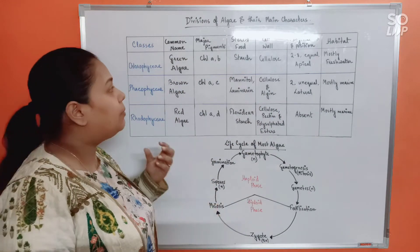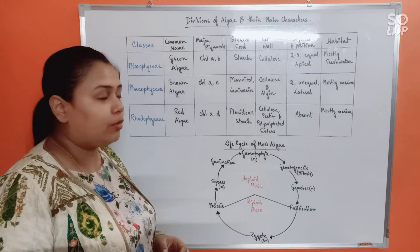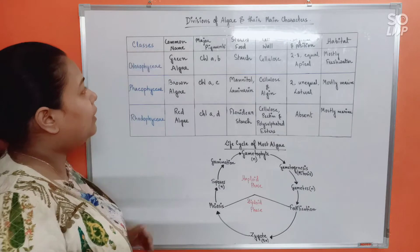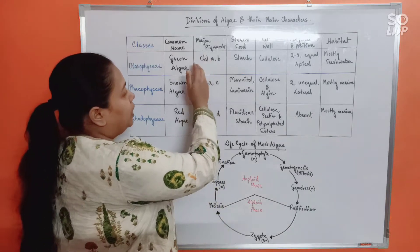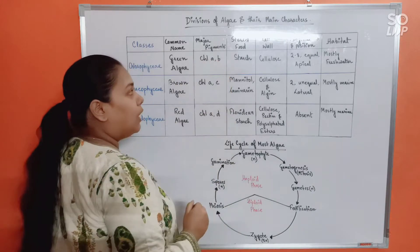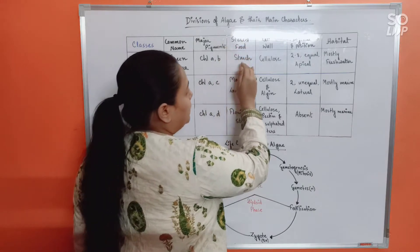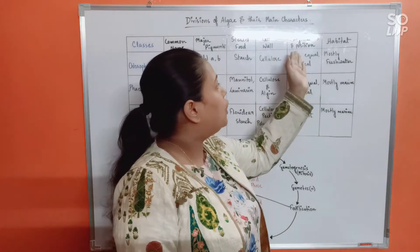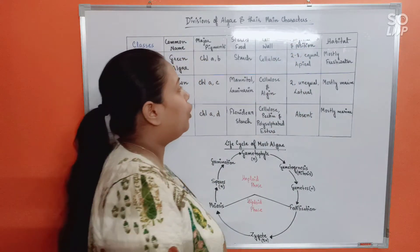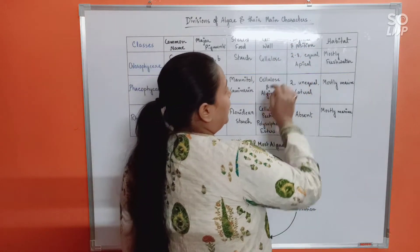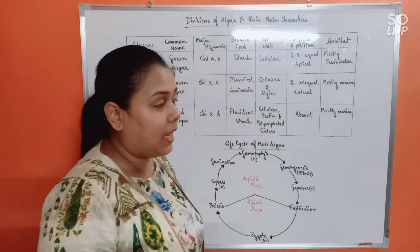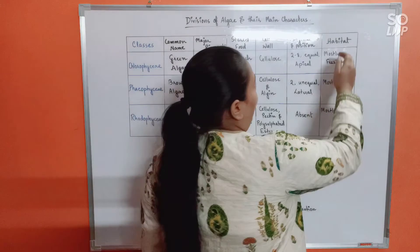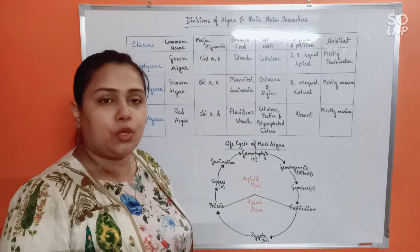See here, Chlorophyceae or green algae. For them, the major pigments would be chlorophyll a and b. Stored food will be starch. Cell wall is made up of cellulose. Finally, the flagella - of course flagella is present in two to eighteen number, equal in size and apically placed. And habitat - as you know, they may be found in freshwater as well as marine habitat, but they are mostly freshwater.